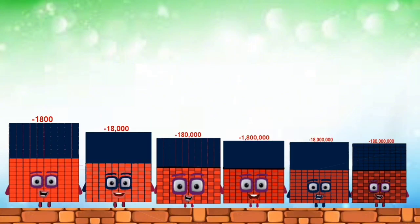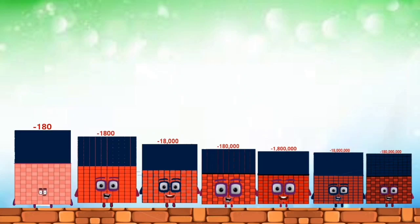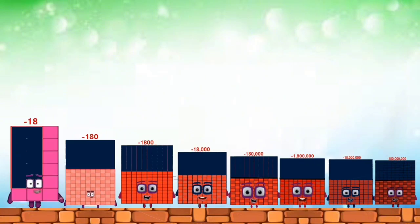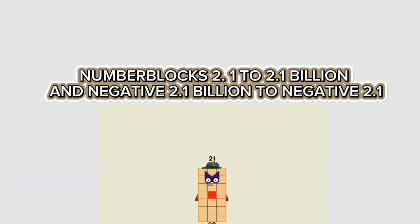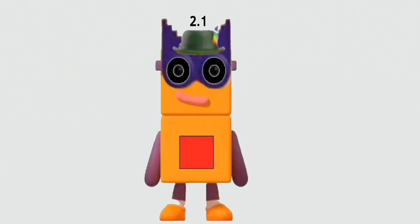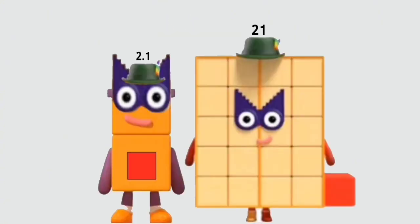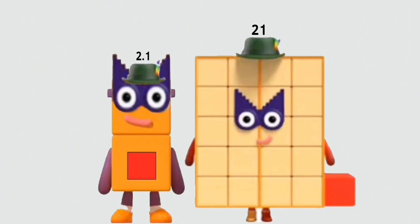Negative one thousand eight hundred. Negative one hundred eighty. Negative eighteen. Number blocks 2.1 to 2.1 billion and negative 2.1 billion to negative 2.1. Twenty-one.